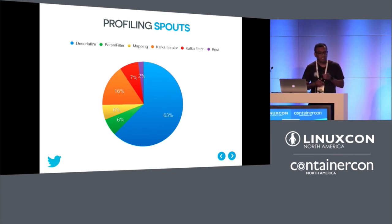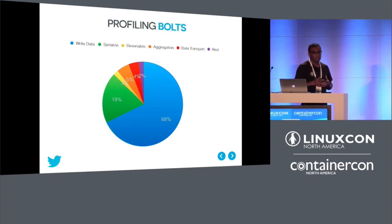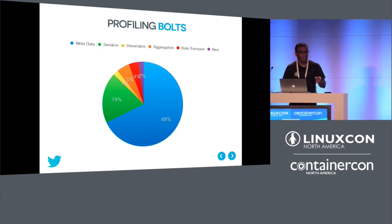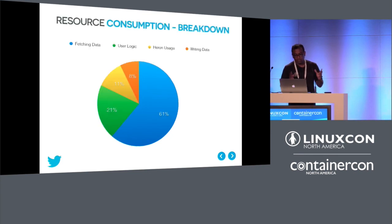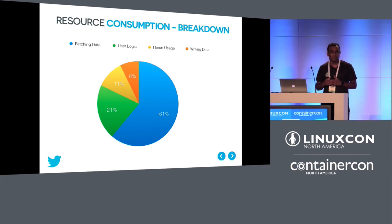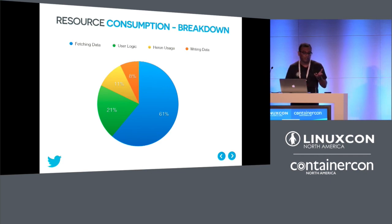In the overall resource breakdown, 61% of resources are dedicated to fetching and deserializing data, user logic takes 21%, writing data takes 8%, and Heron overhead is 11%. There is room to reduce Heron overhead to 4-5%, but the serialization/deserialization bottleneck must be addressed first. Comparing against Storm on a real-time active users topology, Storm consumed 370 cores while Heron consumed only 30-40 cores — a 10x reduction. Similarly, Heron achieves 10x higher throughput and much lower latency.